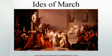According to Plutarch, a seer had warned that harm would come to Caesar no later than the Ides of March. On his way to the Theatre of Pompey, where he would be assassinated, Caesar passed the seer and joked, 'The Ides of March have come,' meaning to say that the prophecy had not been fulfilled, to which the seer replied, 'Aye, Caesar, but not gone.' This meeting is famously dramatized in William Shakespeare's play Julius Caesar, when Caesar is warned by the soothsayer to beware the Ides of March.